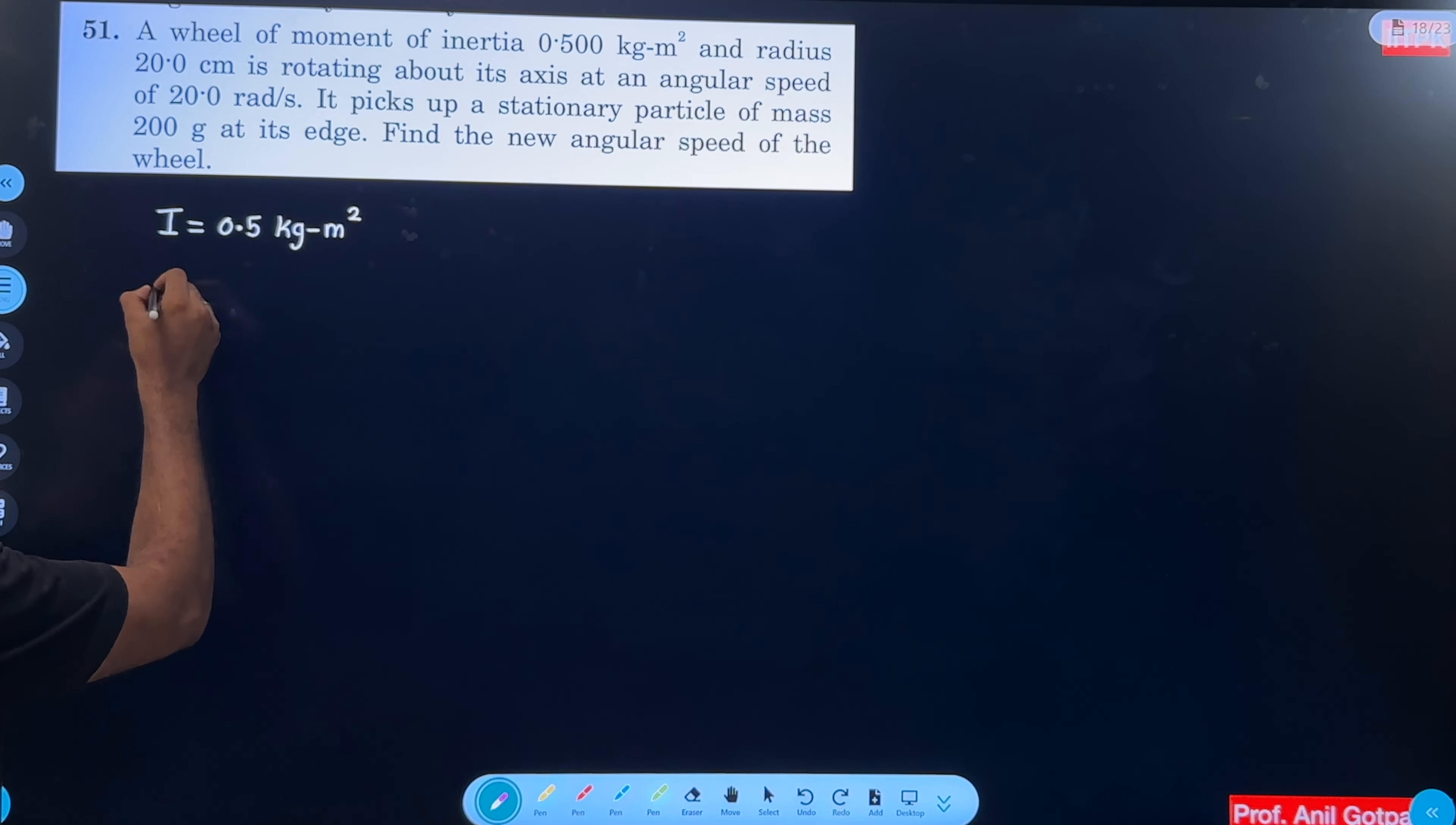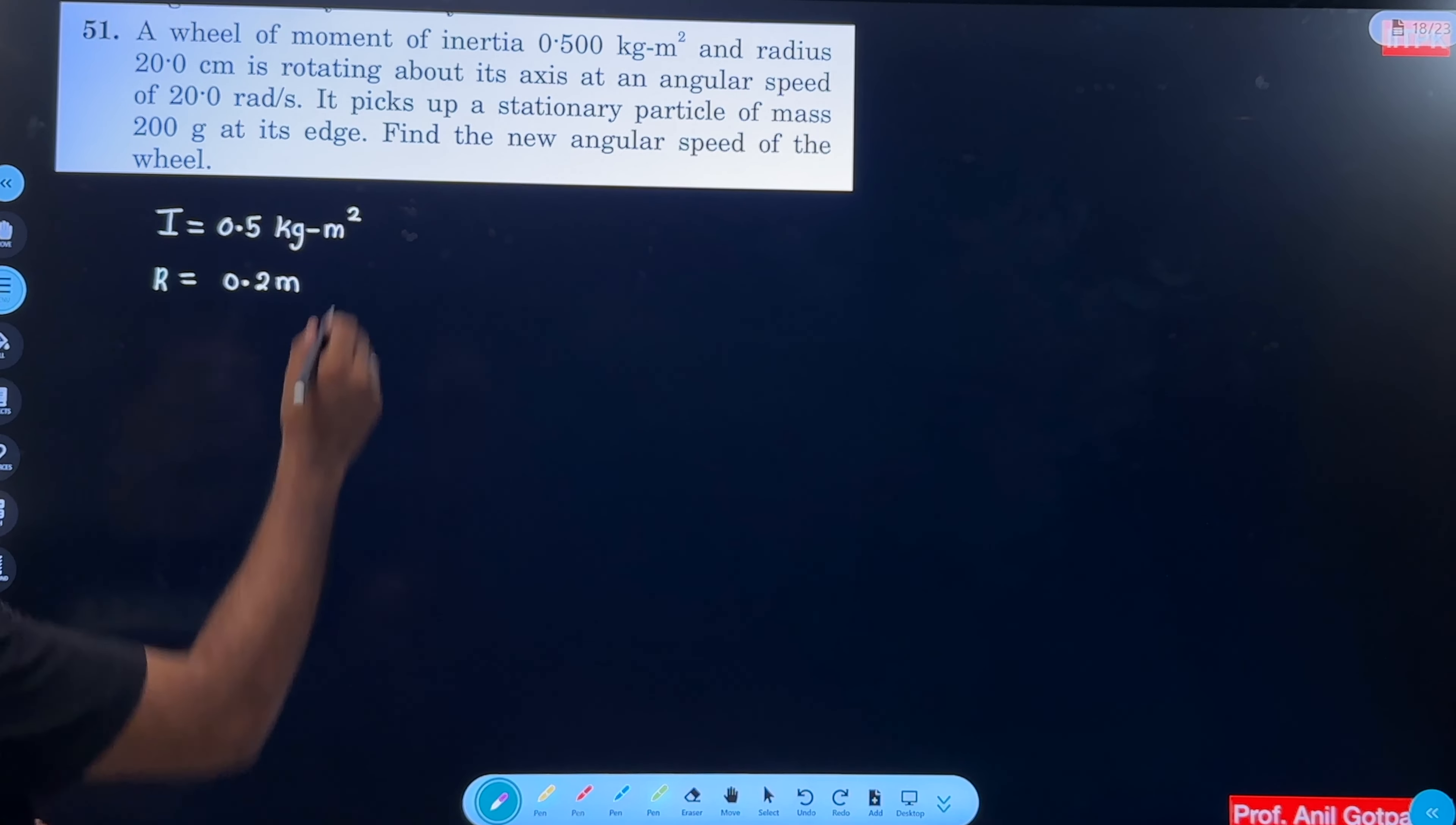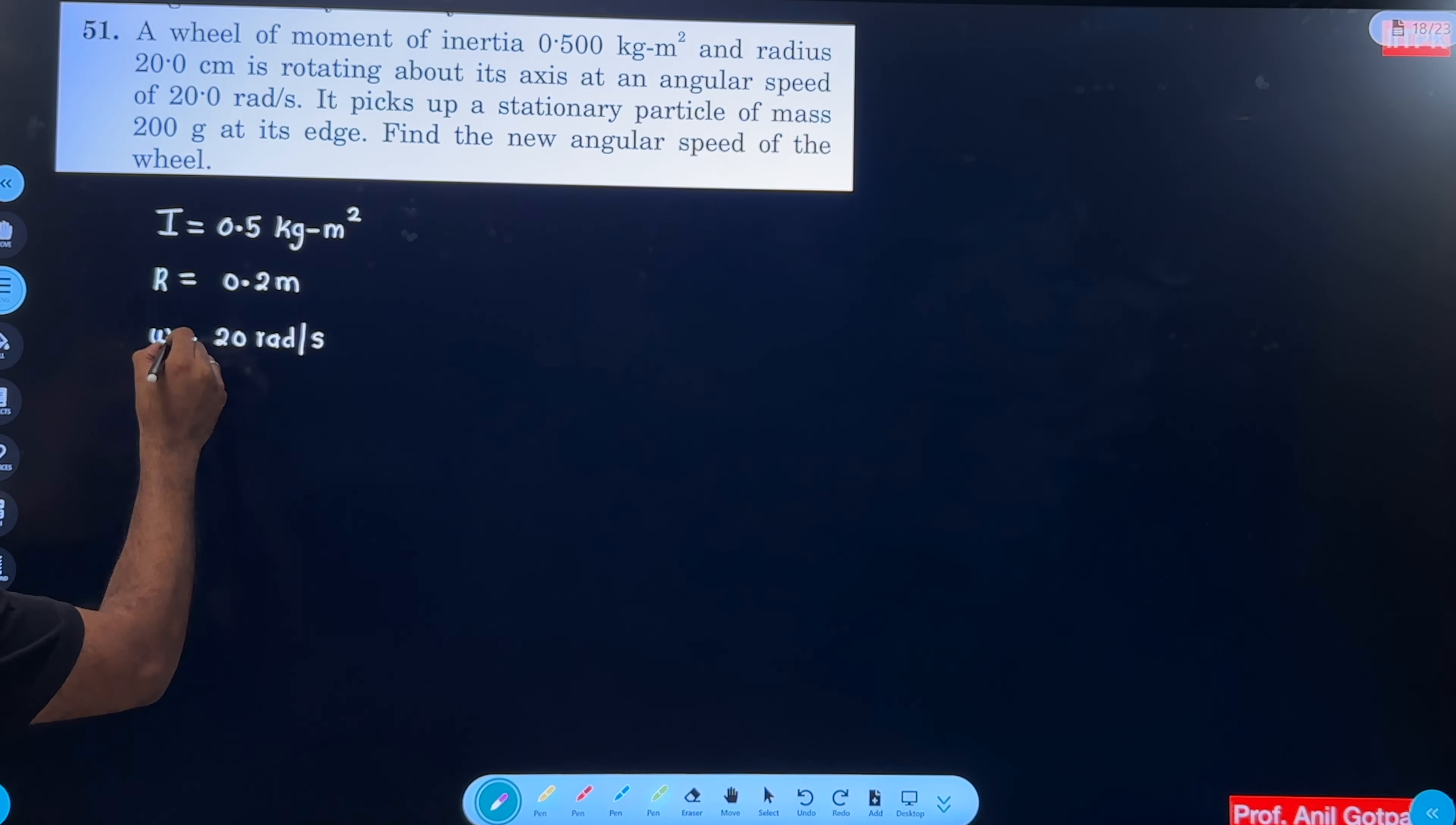And radius is 20 centimeter, 0.2 meter, is rotating about its axis at an angular speed omega is given 20 radian per second. So this is omega 1.